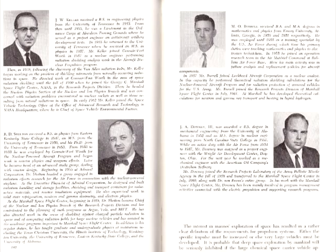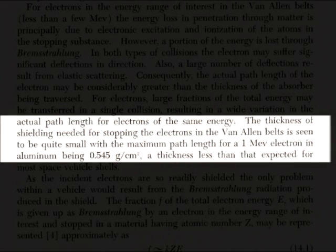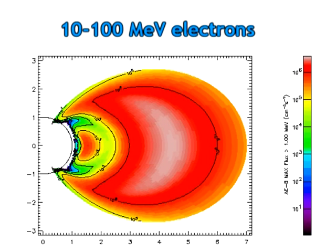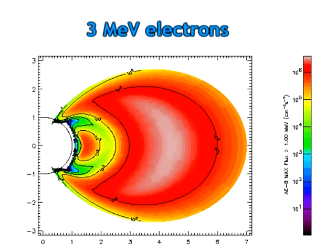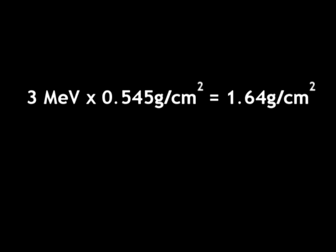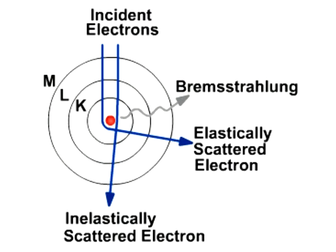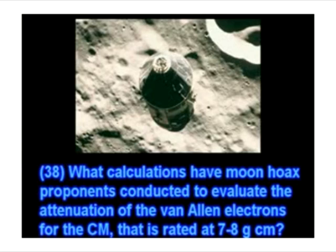Taking the lesser end of this range, it's possible to stop 1 MeV electrons with just over 0.5 grams per centimetre squared of material. The authors of Astronautical Engineering and Science discuss this, writing: 'The thickness of shielding needed for stopping electrons in the Van Allen belts is seen to be quite small, with the maximum path length for 1 MeV electron in aluminium being 0.545 grams per square centimetre.' Stopping 10 to 100 MeV electrons in the outer belt would obviously require more shielding than this. But let's play along with his numbers and say the outer belt contains only 3 MeV electrons. Bringing these to a stop will require a bit over 1.5 grams per square centimetre. But even though you've stopped them, your problems are not over.